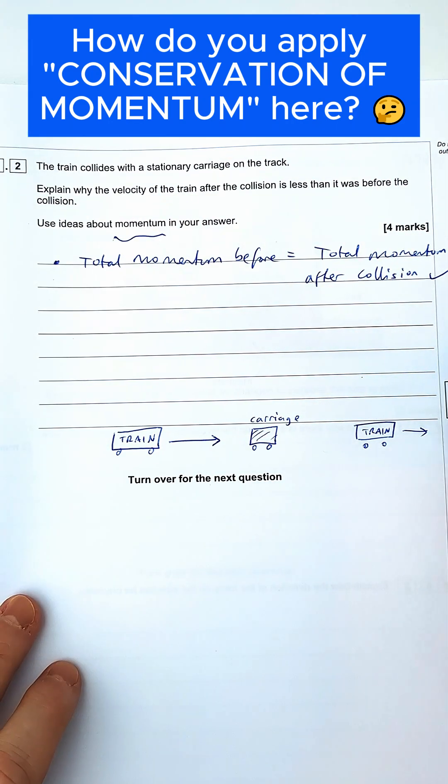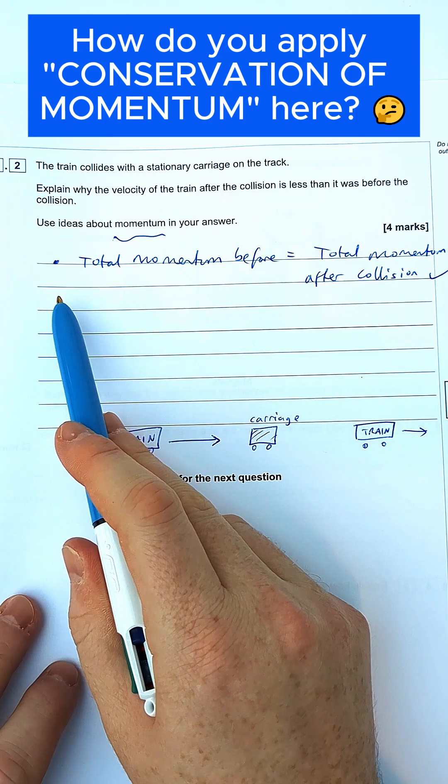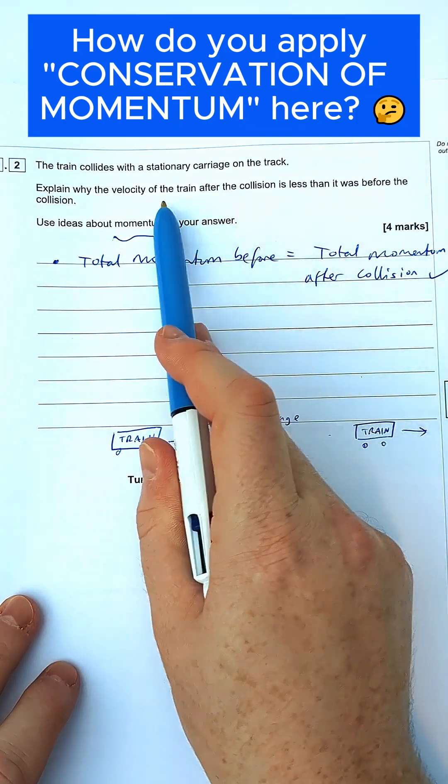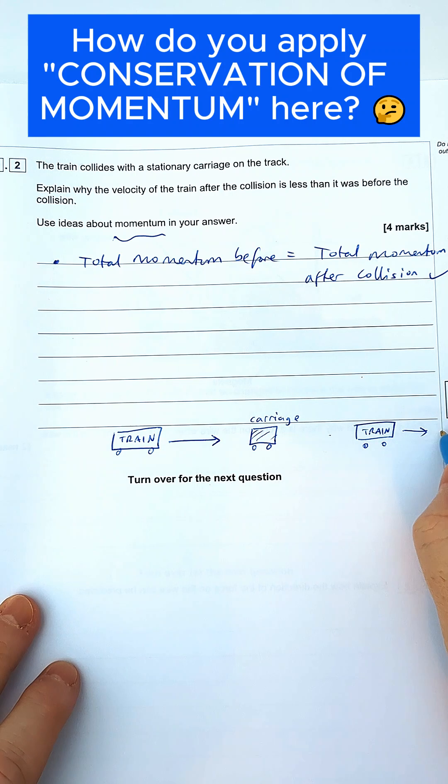Now how do we apply that in this situation? During the collision, the momentum of the carriage is going to increase. The carriage is initially stationary, but it's going to start moving. The train is moving, and the carriage is also going to move in this direction.